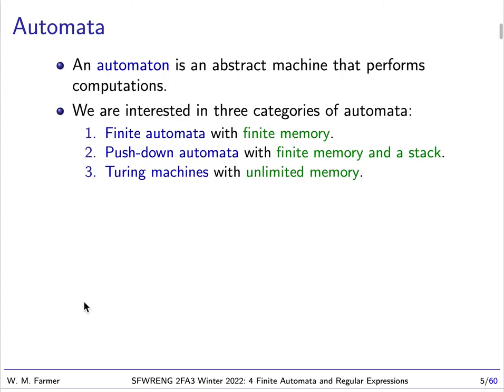An automaton is an abstract machine that performs computation. It allows us to study certain kinds of computation, namely the computation that a particular abstract machine can do. We're going to be interested in three categories of automata: finite automata with finite memory, pushdown automata which have finite memory and a stack — the stack can have unlimited memory but access is controlled like a stack — and then finally Turing machines with unlimited memory.